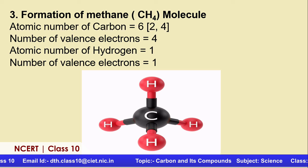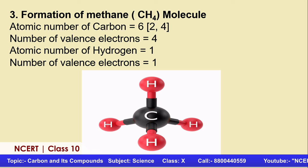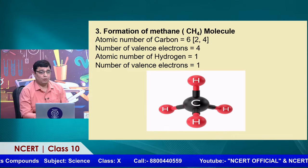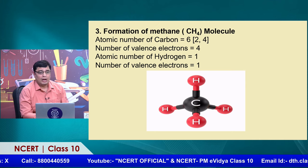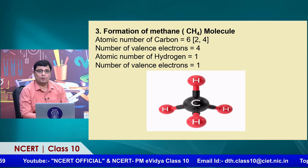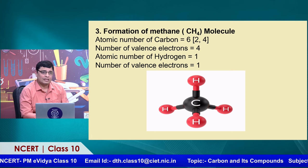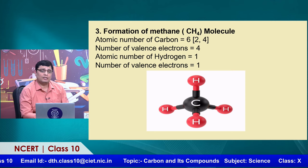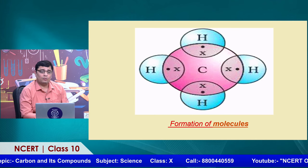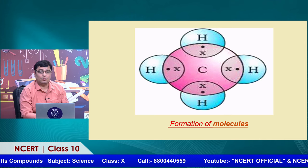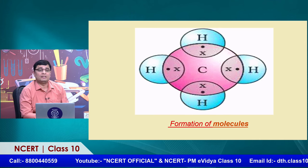The formation of a simple methane molecule can also be explained. Methane has the formula CH4. The atomic number of carbon is 6 (electronic configuration 2,4), so carbon has 4 valence electrons. Hydrogen has atomic number 1 and 1 valence electron. The formation of the CH4 molecule takes place when one electron from each of the four hydrogen atoms shares one electron with carbon. The central atom is carbon, with its 4 valence electrons shown by crosses and the 1 electron of each hydrogen atom shown by a dot.